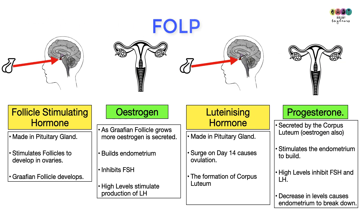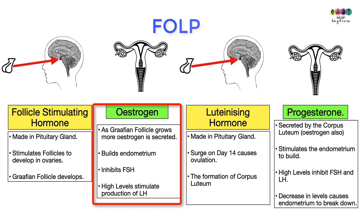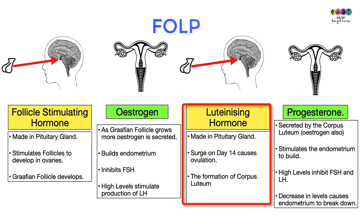To summarize the key events of FOLP: Follicle Stimulating Hormone, made in the pituitary gland, stimulates follicles to develop in the ovaries — one matures to become the Graafian follicle. The Graafian follicle secretes increasing amounts of estrogen, which causes the endometrium to build up. High estrogen inhibits FSH secretion and also stimulates the secretion of Luteinizing Hormone by the pituitary gland.